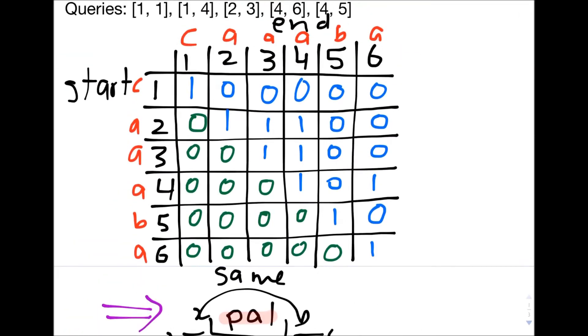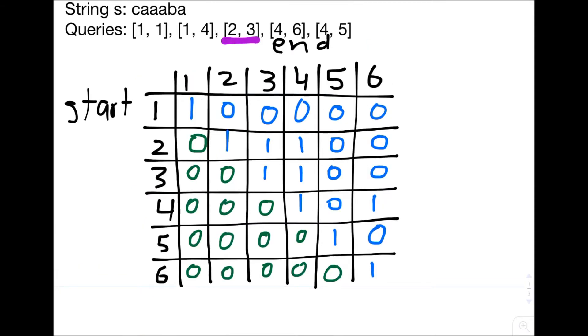I'll explain better how to write the program during the end of the video. Now let's focus on how to use this table to solve the actual problem, to find all the palindromes within a particular range. Let's consider the query 2,3. This means that the string can start anywhere from 2 to 3, and it has to end anywhere from 2 to 3, but it must end after it starts. This is represented by this box right here.